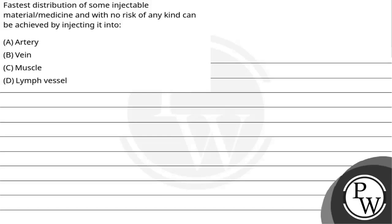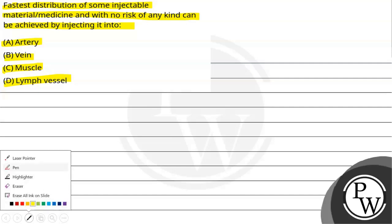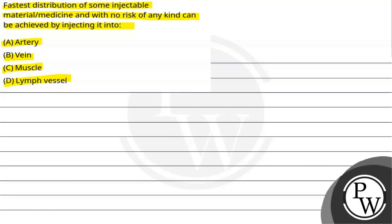Let's see this question. The question says: fastest distribution of some injectable material or medicine with no risk of any kind can be achieved by injecting it into — option A: artery, option B: veins, option C: muscle, option D: lymph vessel. The question is asking which is the fastest distribution method by which we can easily inject medicine without causing much trouble. The key concept here is veins.